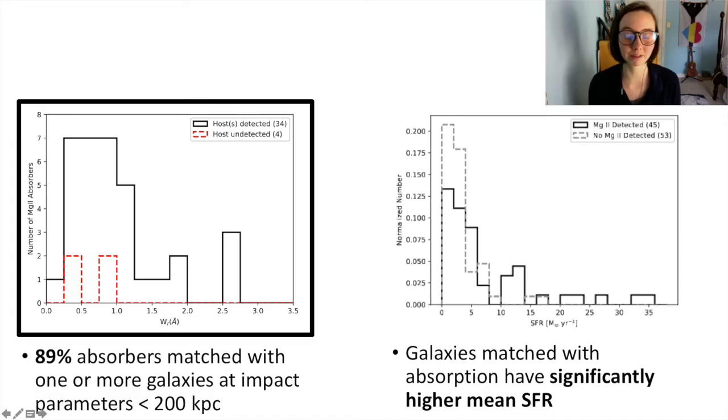We were able to spectroscopically match 89% of those absorbers with one or more galaxies up to 200 kiloparsecs from the quasar sightline, which is shown in the plot to the left.